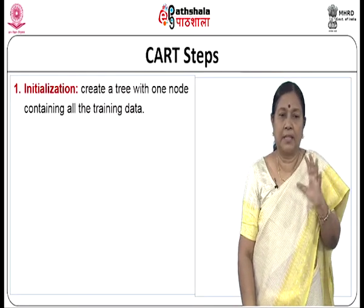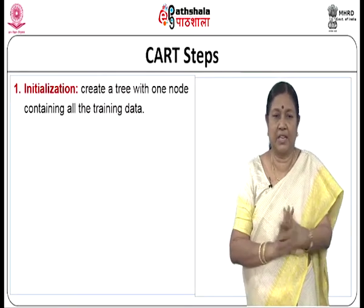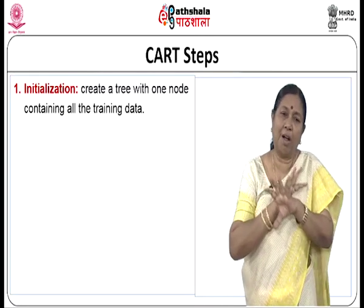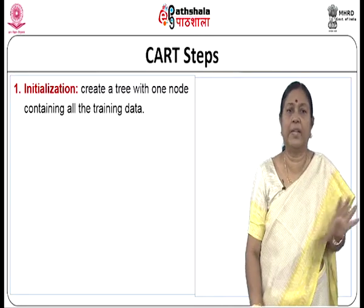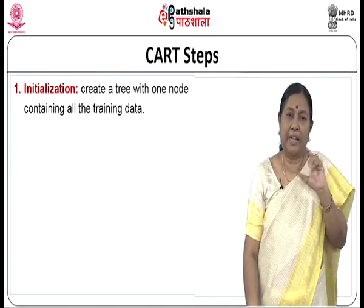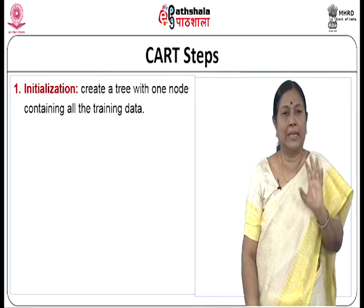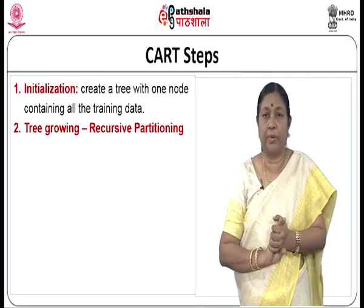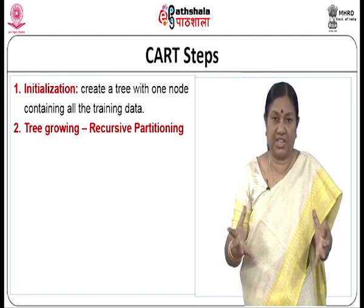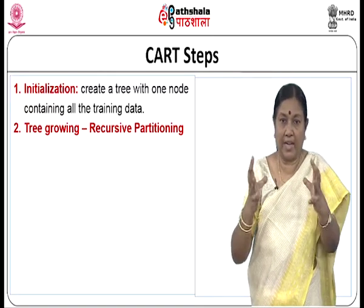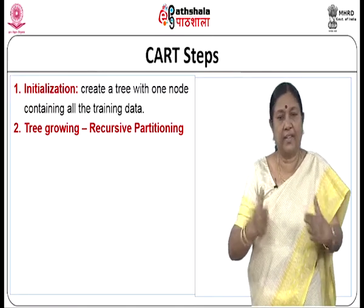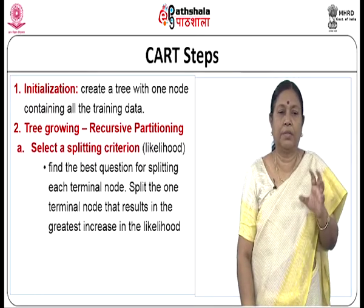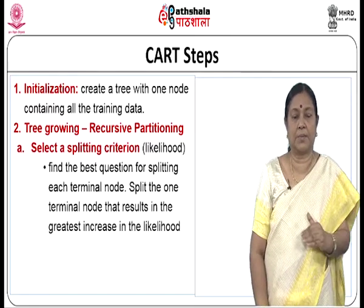Now let us look at the steps of CART. Step one is initialization: create a tree with one node that contains all the training data. Step two is tree growing, also called recursive partitioning — you keep dividing the dataset. The first sub-step in recursive partitioning is to select a splitting criterion: how do you split the dataset into two?